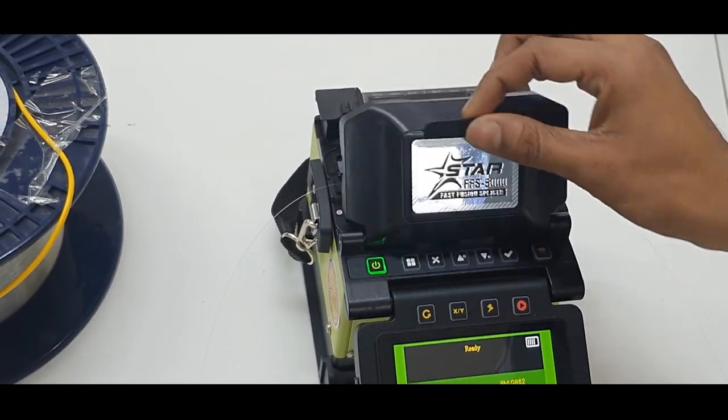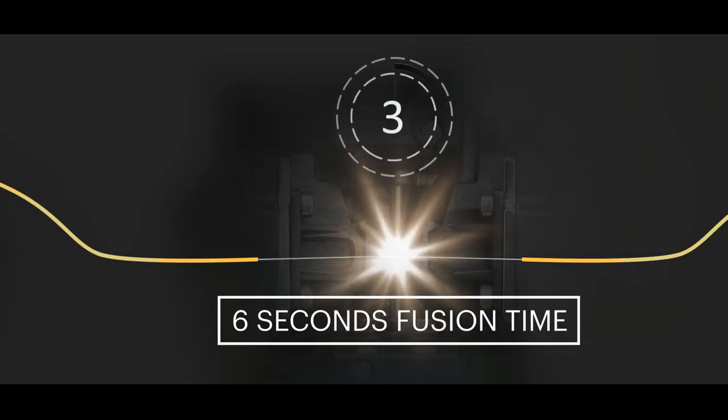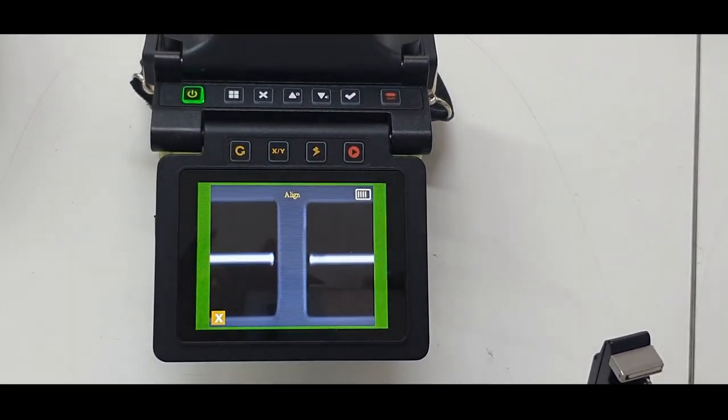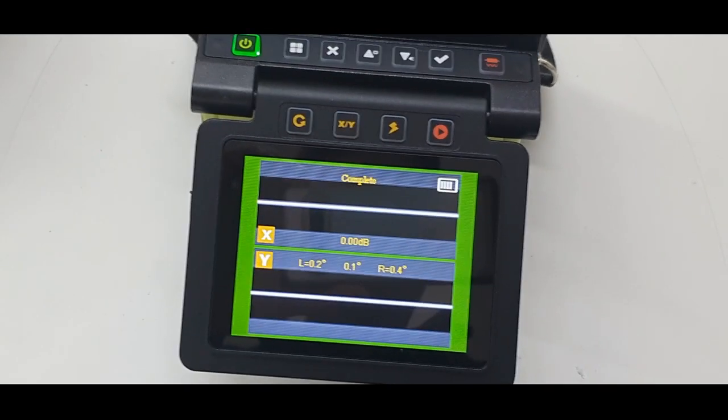I will cover, and the machine is going to automatically align and fuse the two cords. That was very, very fast. On the screen showing us that the loss is 0.00 dB.